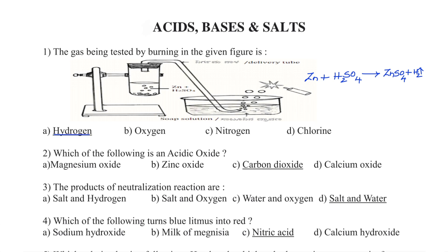Question number 2. Which of the following is an acidic oxide? Option A — Magnesium oxide, Option B — Zinc oxide, Option C — Carbon dioxide, Option D — Calcium oxide. The right answer is Option C — Carbon dioxide.